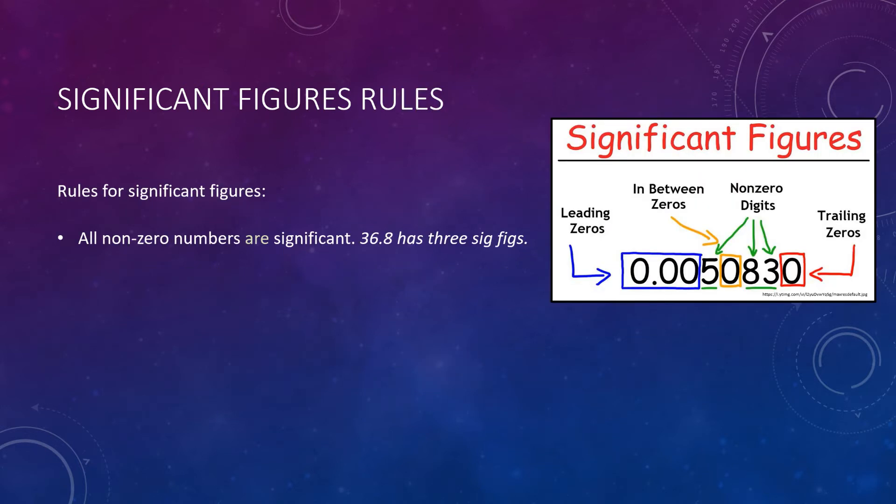So, to begin, let's just start with the simplest rule of them all. All non-zero numbers are considered significant. So, as a random number I just threw out here, 36.8. All of those are non-zero numbers, so all of those are significant. In other words, the number 36.8 has three significant figures or shorthand sig figs.